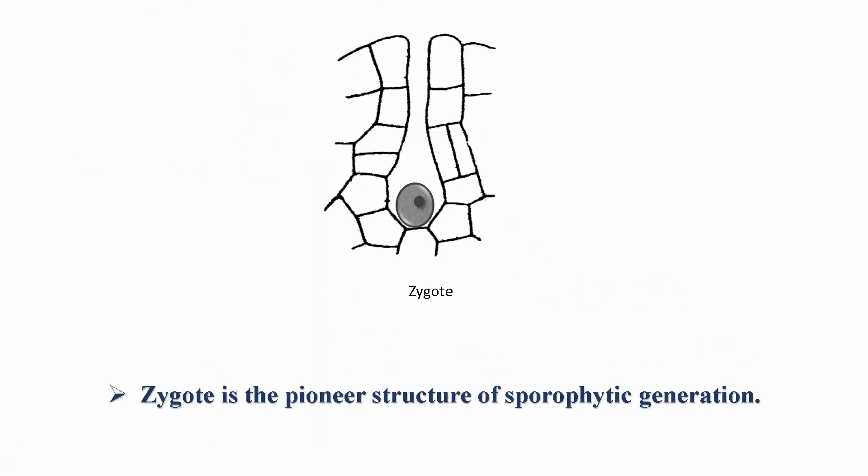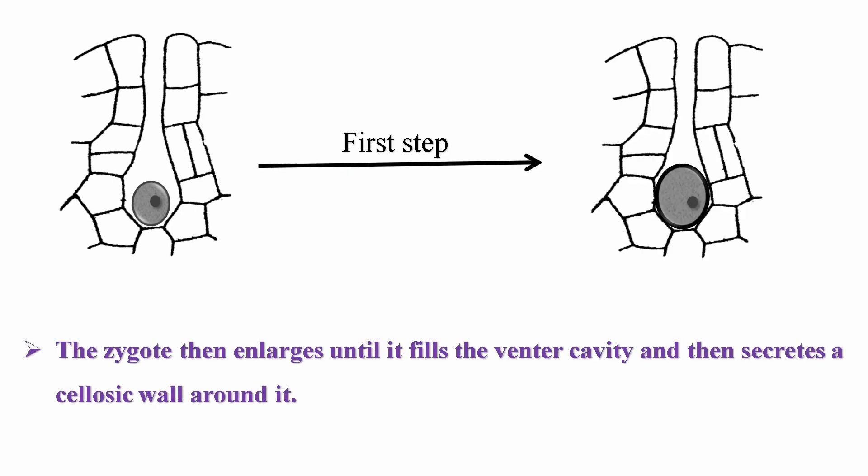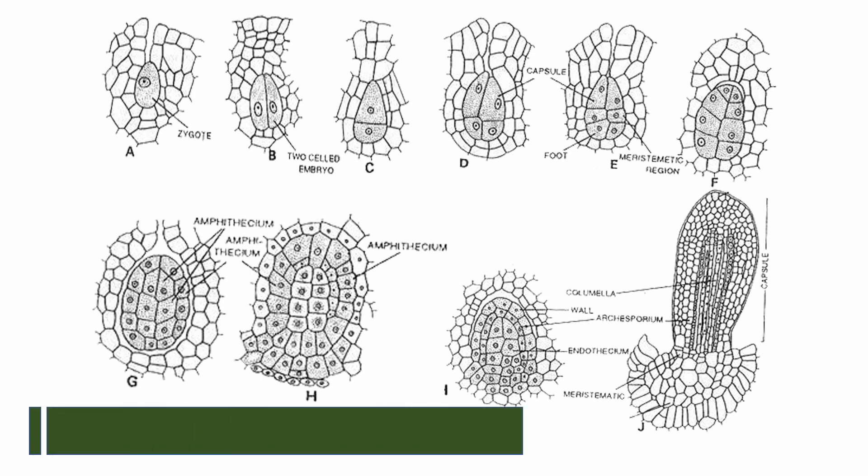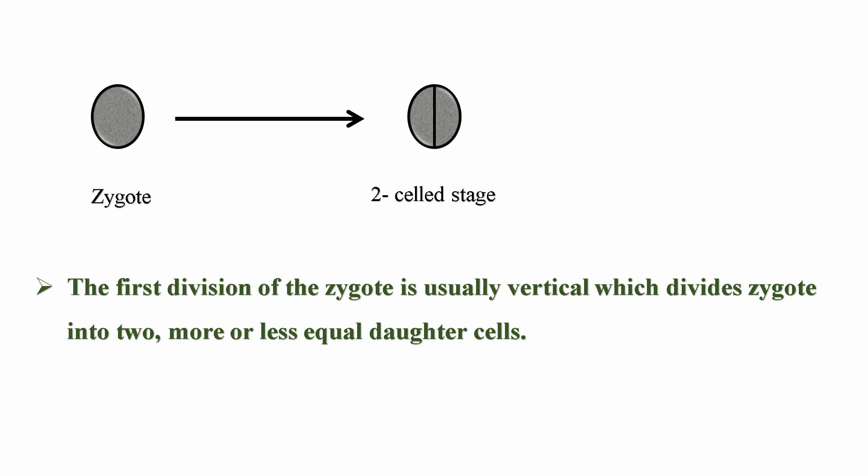Zygote is the pioneer structure of sporophytic generation which is formed by the fusion of antherozoid and egg. In the next step, the zygote enlarges until it fills the venter cavity and then secretes a cellulosic wall around it. After this, zygote enters upon active segmentation.